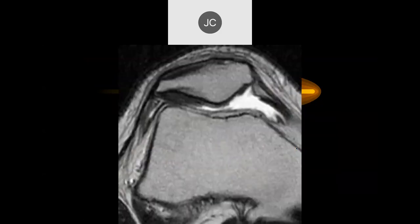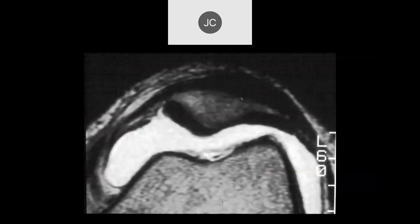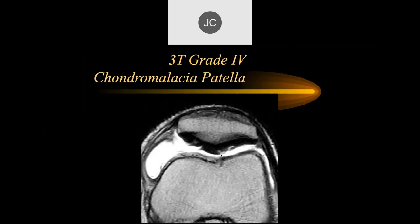Here's another case on a lower field scanner showing full thickness defects — grade 4 chondromalacia, chronic grade 4 chondromalacia on both sides of the patella. We can see multiple areas of deep fissuring, not all of which are probably grade 4, but this probably is a grade 4 coming in here.